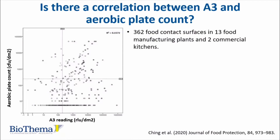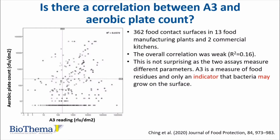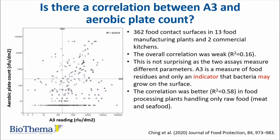362 food contact surfaces in 13 food manufacturing plants and two commercial kitchens were studied. The overall correlation was weak, as the two measures detect completely different parameters. A3 is a measure of food residues and only an indicator that bacteria may grow on the surface. The correlation was better — 0.58 — in food processing plants handling only raw food such as meat and seafood. At a cut-off limit of 500 RLU, 72% of samples were correctly classified. We must also remember that not all bacterial species are detected by aerobic plate count.